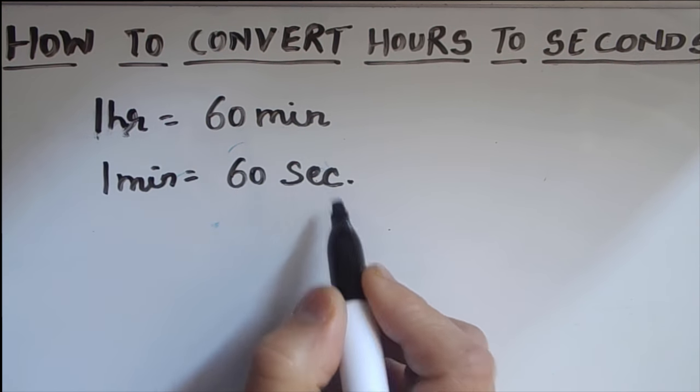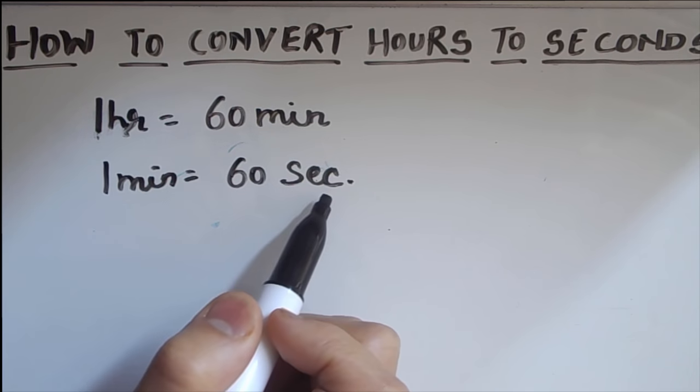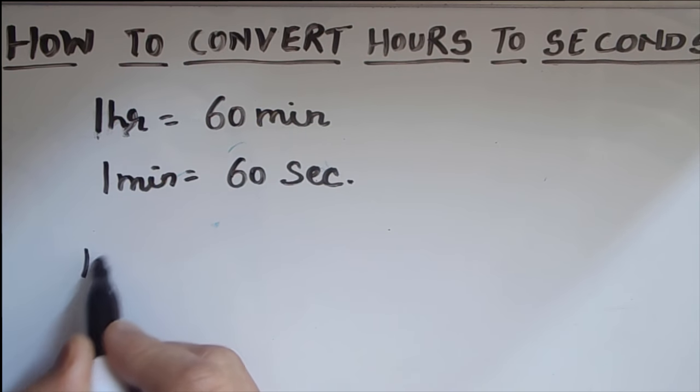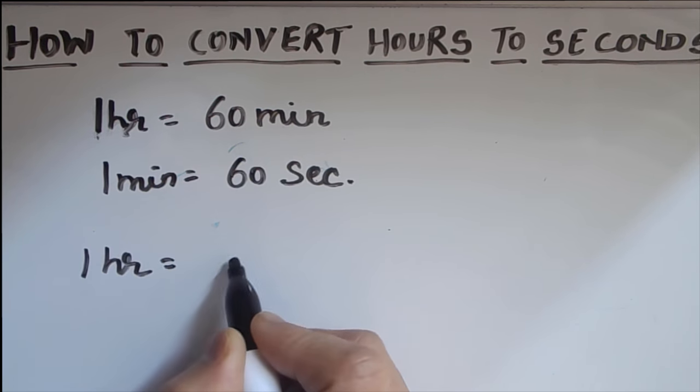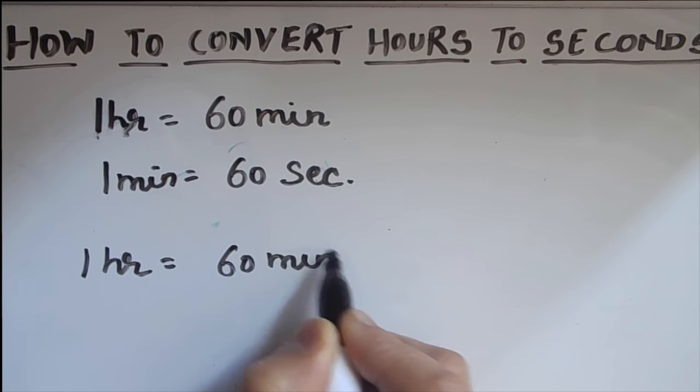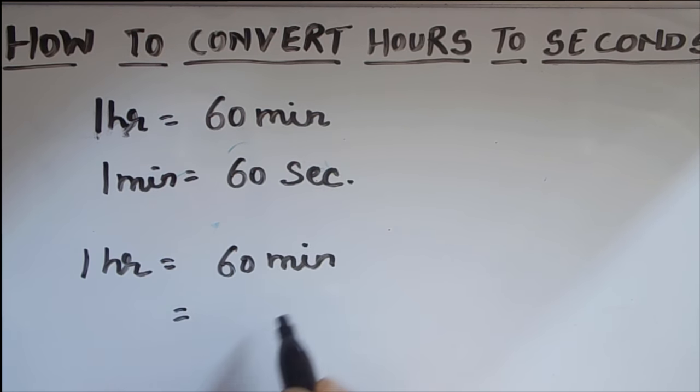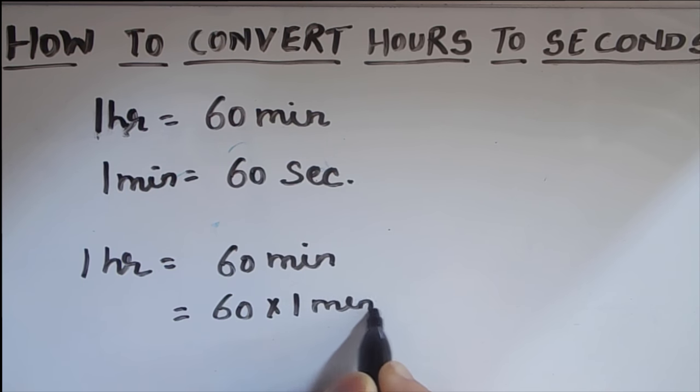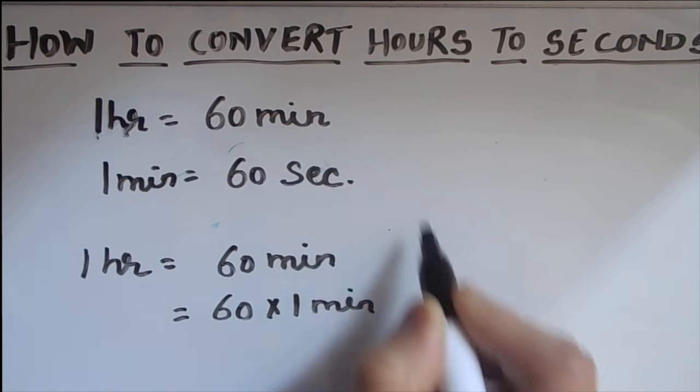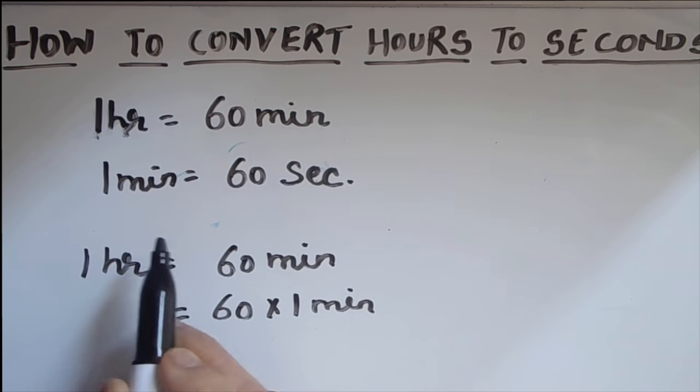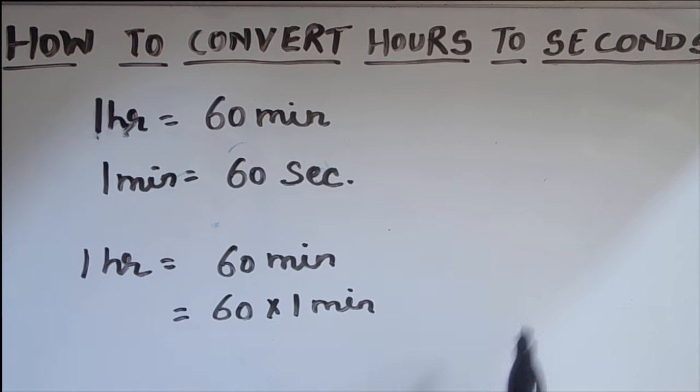So to convert from hours to seconds, we need to have a relation between hour and second. What we can do: one hour, we can write it as 60 minutes, which is equal to 60 times one minute. And in place of one minute, we'll write seconds because we want the relation between hours and seconds.